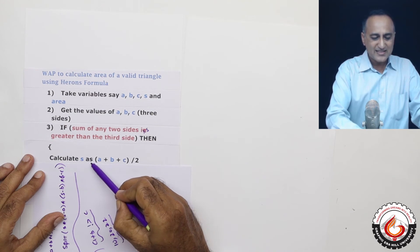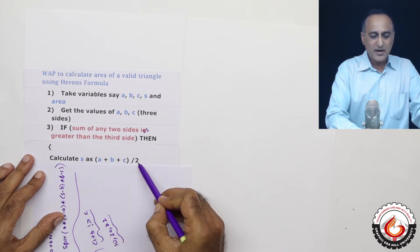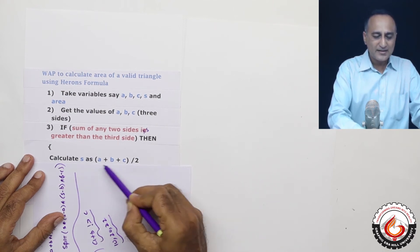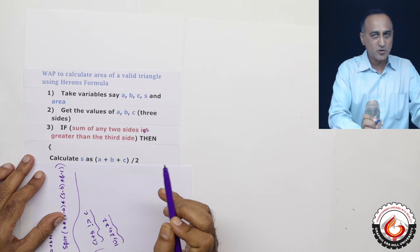So I will calculate S as A plus B plus C by 2. Do not forget to put this bracket because if you forget it will divide C by 2 and then add it to A plus B which is not what you want.